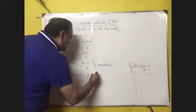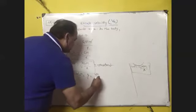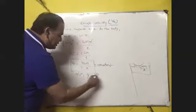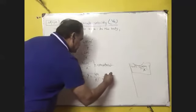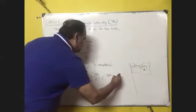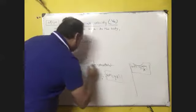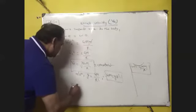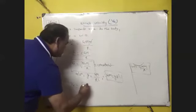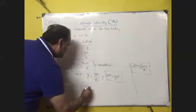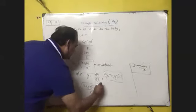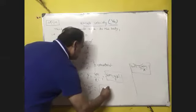You remember g equal to GM by R square, so GM value, GM equal to gR square. So V equal to under root 2 into gR square upon R, so it is under root 2gR.